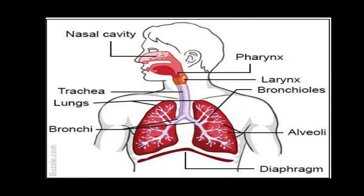This is a simple diagram of your respiratory system. The respiratory system consists of organs like nasal cavity, pharynx, larynx, trachea, along with the lungs and diaphragm. So one by one we will discuss these organs in detail.